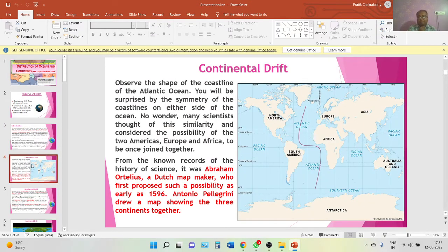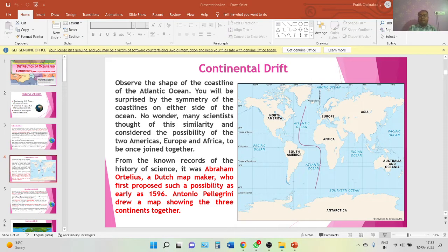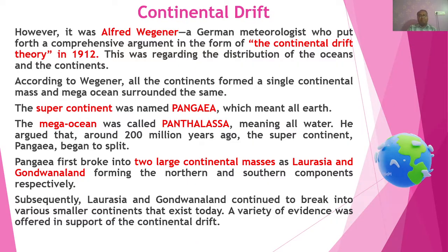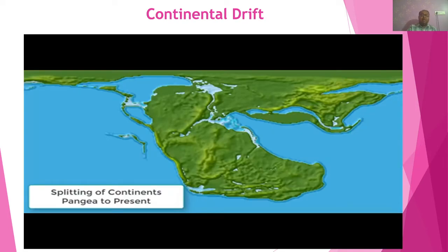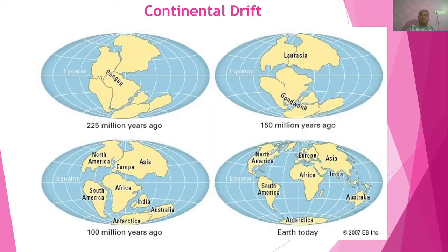We have seen the example that if you cut the world map, it can easily fit like a jigsaw puzzle. We have also seen some of the important evidences about Pangea and Panthalassa, and analyzed how the continents started evolving with time. After that, we saw how the continents started breaking from Pangea, with divisions taking place into Laurasia and Gondwana Land.